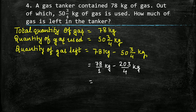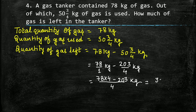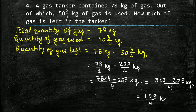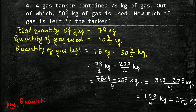LCM will be 4. Write 4 as the common denominator. For this fraction we have to multiply by 4, so 78 multiplied by 4 minus 203 kg. It will equal 312 minus 203 upon 4 kg, which equals 109 upon 4 kg. Convert it into a mixed fraction and we will get 27 whole 1 upon 4 kg. The answer is: quantity of gas left is equal to 27 whole 1 upon 4 kg.